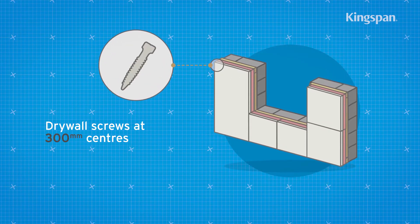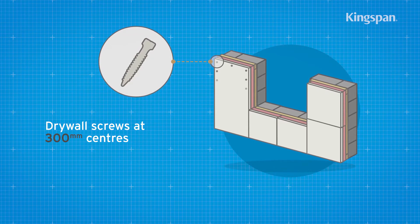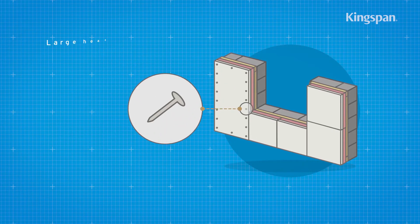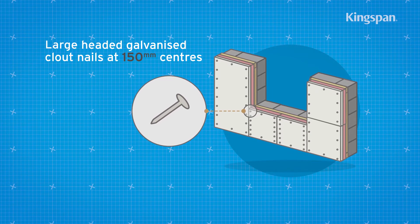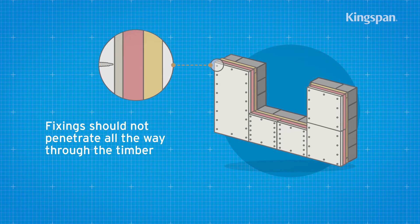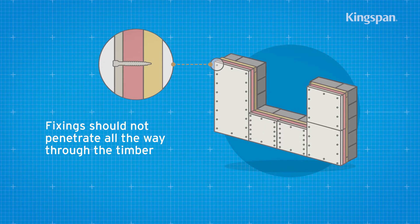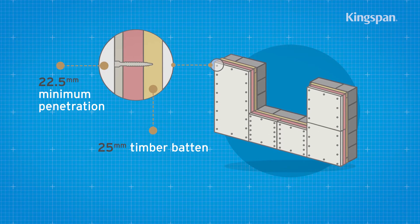Fix the sheets with either drywall screws at 300mm centres or large headed galvanised clout nails at 150mm centres. Fixings should be long enough to allow a minimum penetration into the timber batten or frame.